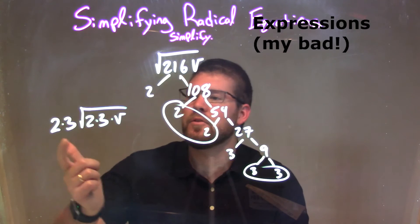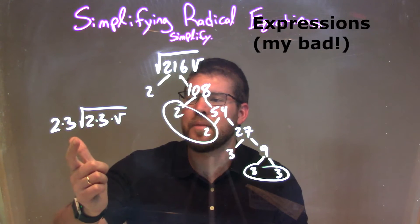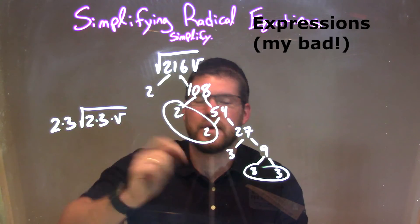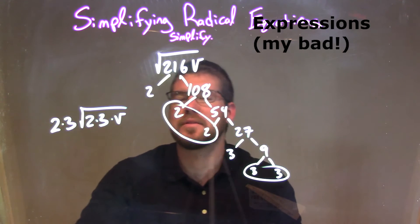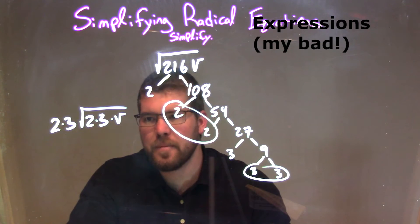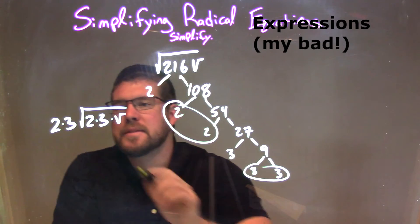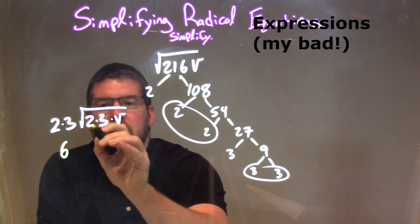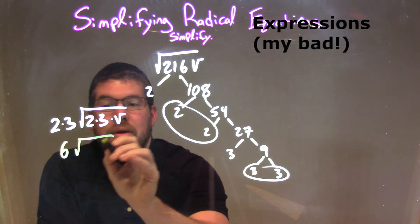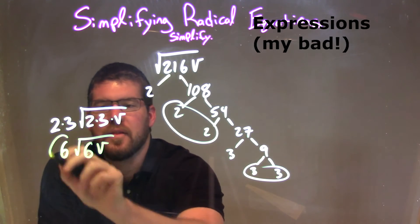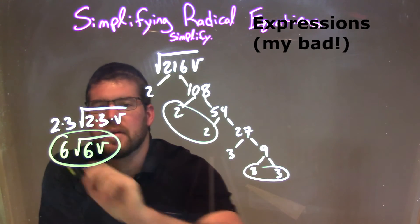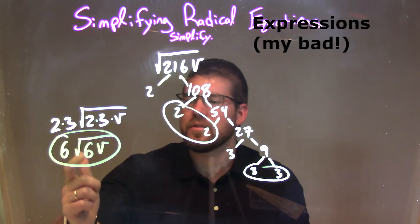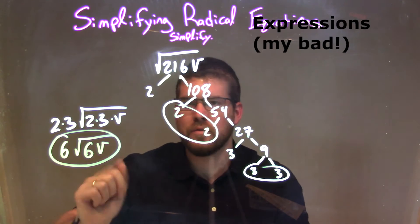So now we have 2 times 3 on the outside, times the square root of 2 times 3 times V. That's the same thing as the square root of 216v. So now I simplify: 2 times 3 is 6, and 2 times 3 inside gives us 6, so square root of 6v. We have a final answer of 6 square root of 6v.